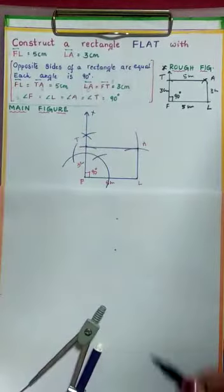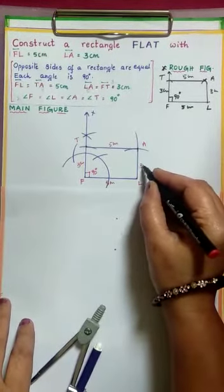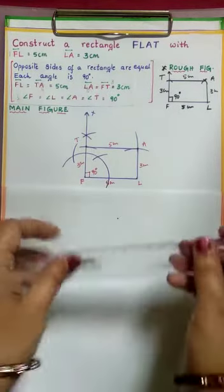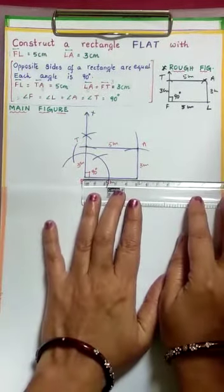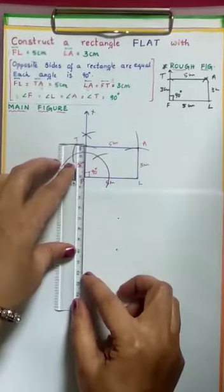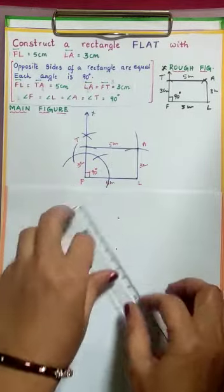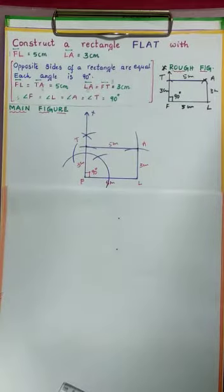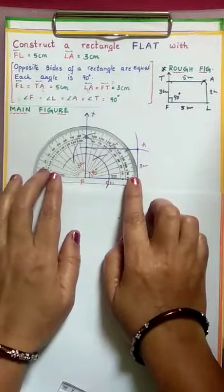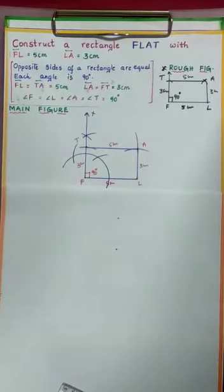Immediately write the lengths — this is 5 cm and this is 3 cm. Measure and see children; you will definitely get this 5 and opposite length also 5, and here 3 cm, opposite length also 3 cm. To check the angle, use the protractor — exactly we have 90 degrees.